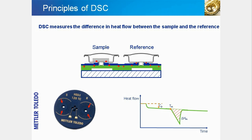The star shape is formed by the many thermocouples incorporated in the sensor. The thermocouples guarantee that the heat flow is accurately measured. The measurement curve shows a typical melting peak. The curve provides valuable information, such as the enthalpy of melting, the melting point, and the specific heat capacity.